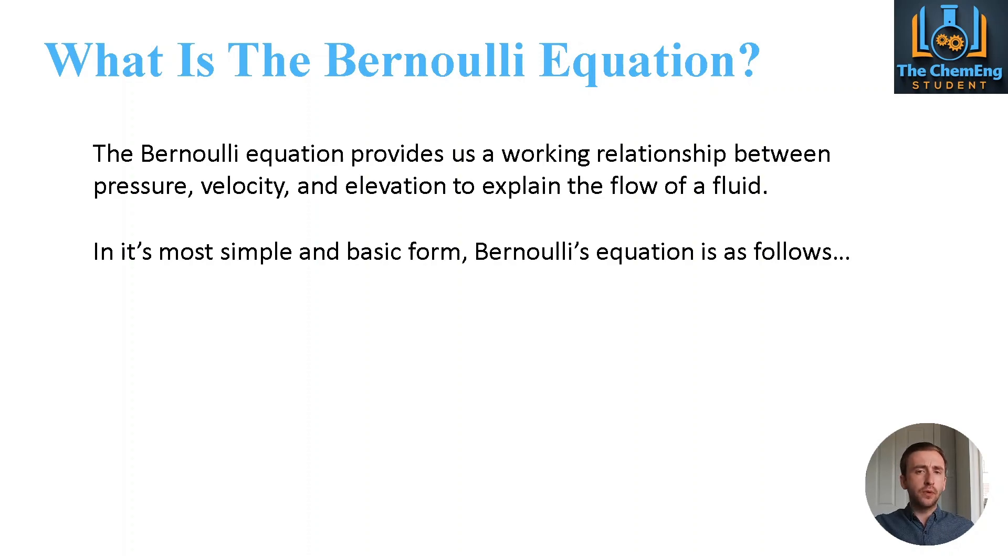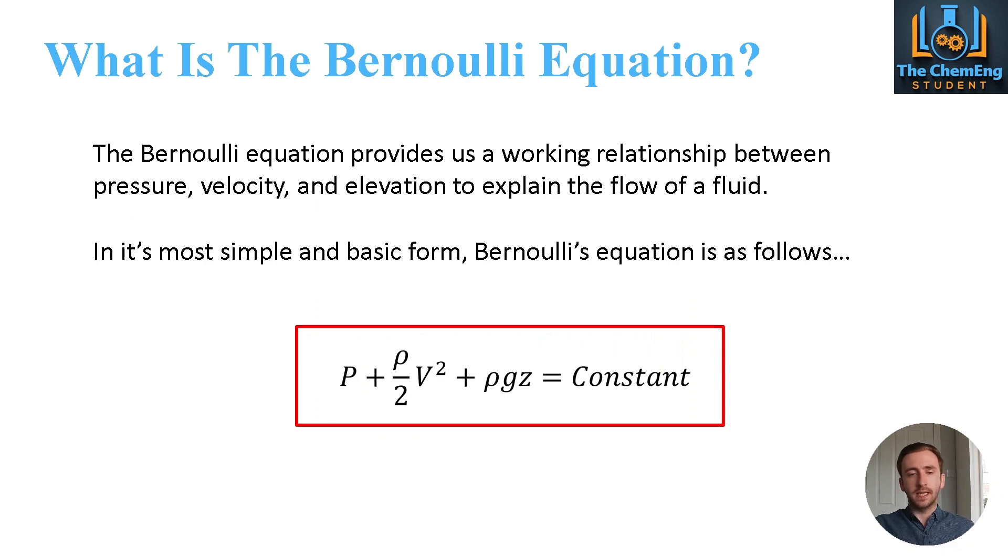Now in simple and most basic terms the Bernoulli's equation can be expressed as follows. So we have P plus rho over 2 v squared plus rho gz equals some constant. Now this will be important later on when we begin to analyze and relate pieces of information together.